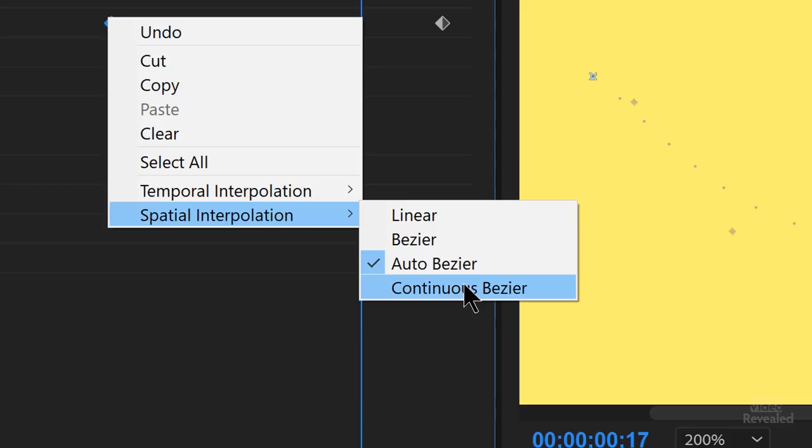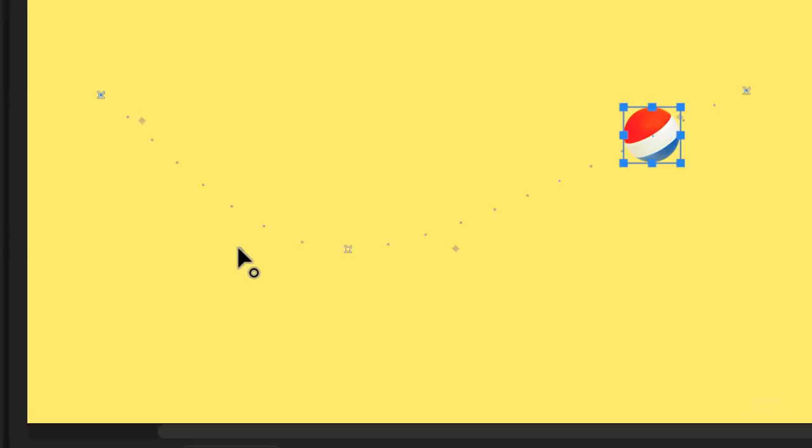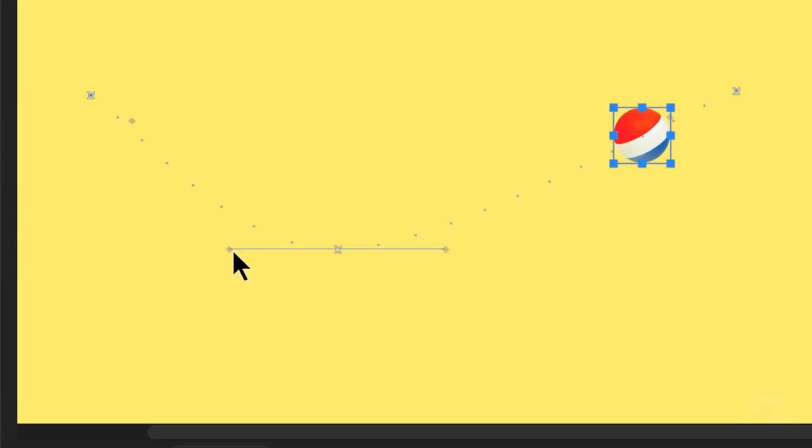So by default, this is Auto Bezier. And I've got this on a yellow background just so we can see the blue here a little bit easier. You can see the keyframe was smooth when I created this. Remember, that is a smooth keyframe for space.